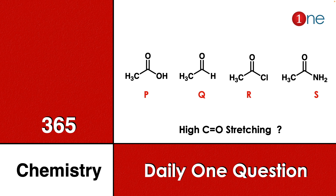Welcome to One Chemistry. This is the 365 Chemistry series — daily one question for you. Here, four different carbonyl compounds are given: P is an acid, Q is an aldehyde, R is an acid chloride, and S is an amide. You have to find which one has the highest C=O stretching frequency.